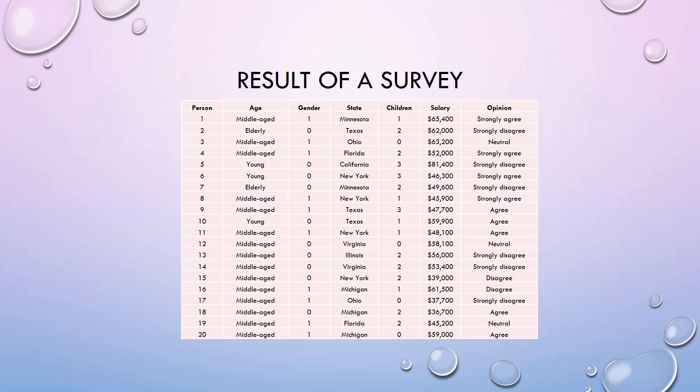Now let's look at an example to practice data types. This dataset contains the result of a survey on the quality of internet service. It has 7 variables and 20 observations.